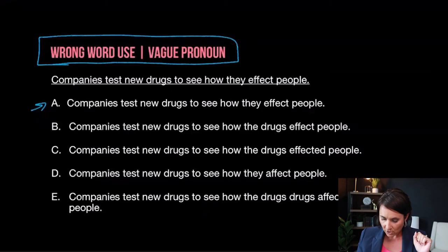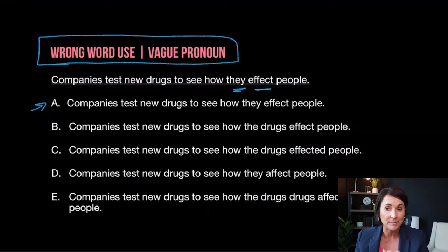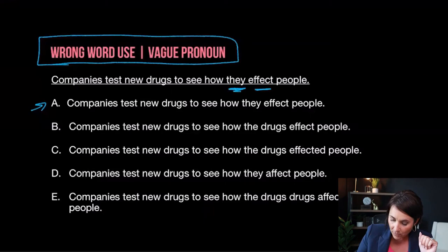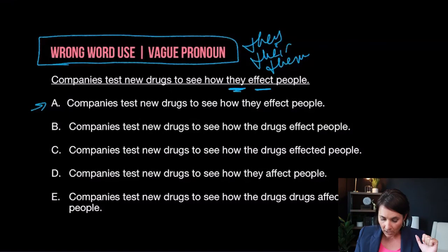We have: "Companies test new drugs to see how they affect people." Two things going on here — I'm talking about wrong word choice and vague pronoun. Whenever I see the word effect or affect, I want to slow down because they're probably testing my affect versus effect knowledge. And I have the word "they" here. Whenever you see they, their, or them, slow down — they're probably testing your pronouns.